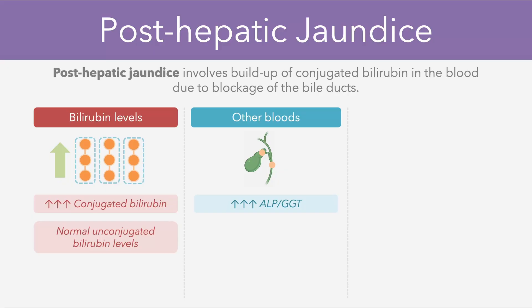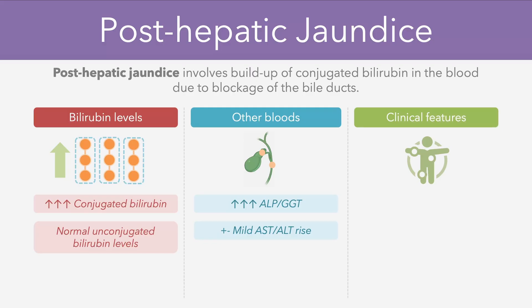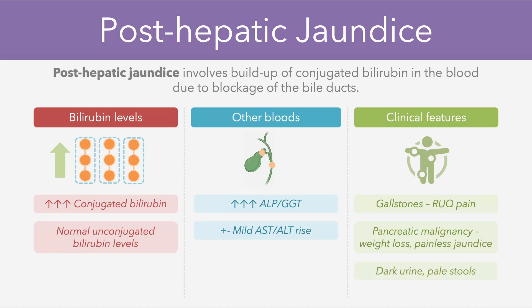In later stages of the condition, we might also see a rise in the AST and ALT as the bile backflows into the liver. Regarding clinical features, patients with gallstones might complain of right upper quadrant pain, while patients with pancreatic malignancies might have a chronic history of weight loss and painless jaundice. Post-hepatic jaundice also typically leads to dark urine and pale stools. The conjugated bilirubin cannot enter the gut, so it can't be converted to stercobilin, which gives stool its dark colour. At the same time, the conjugated bilirubin, which is water-soluble, ends up backing up into the kidneys where it's excreted into the urine, giving the urine a darker colour compared to usual.